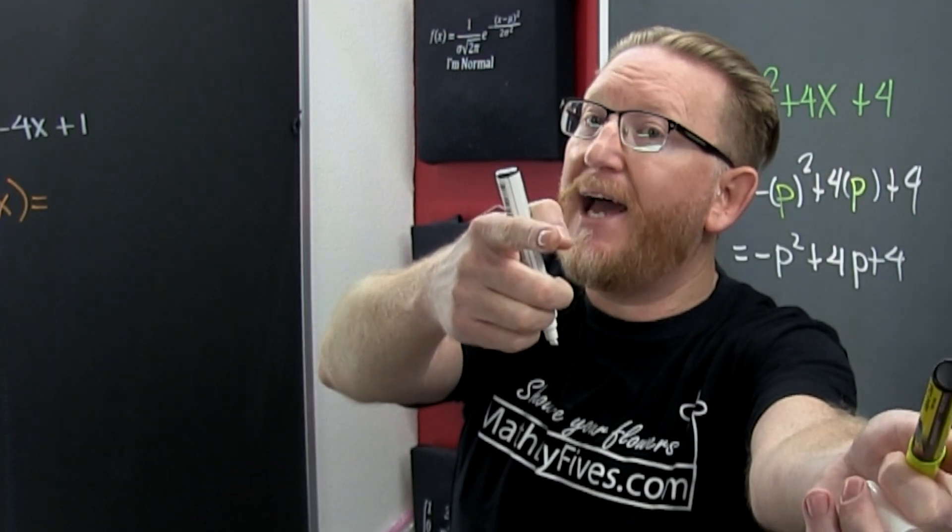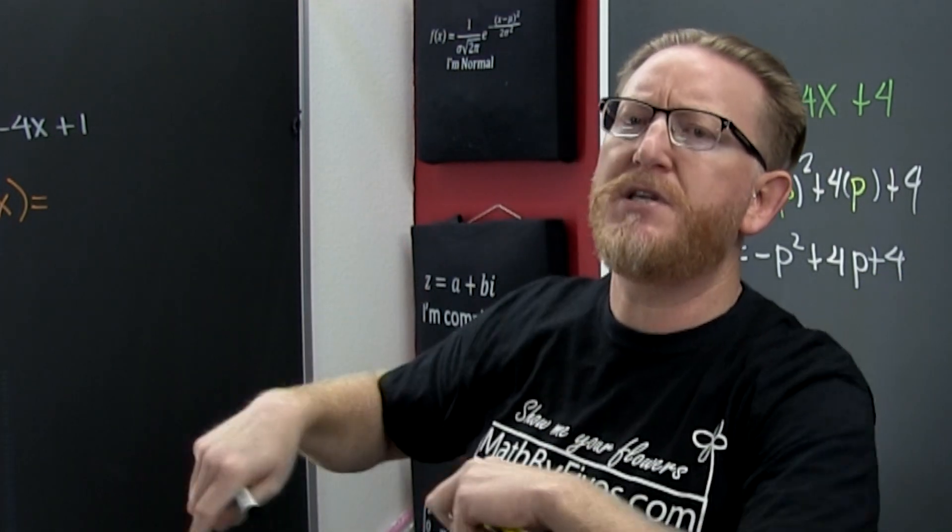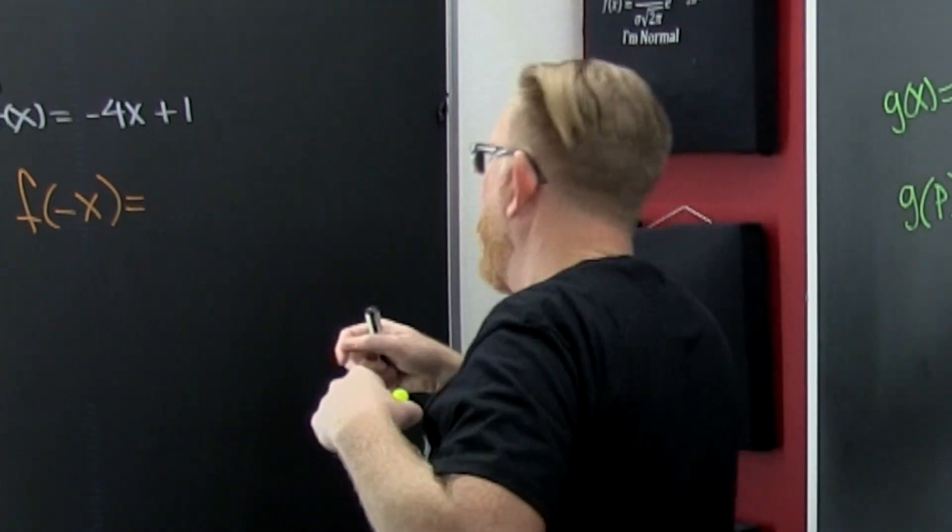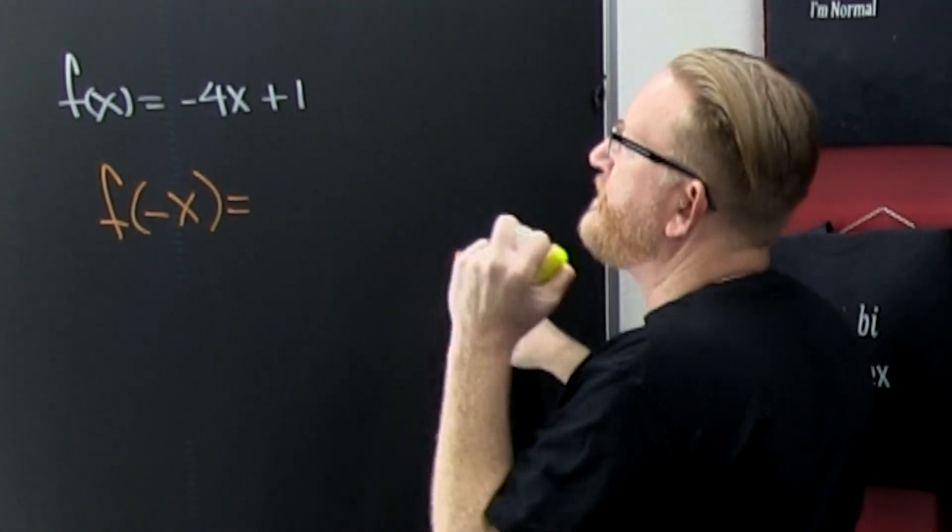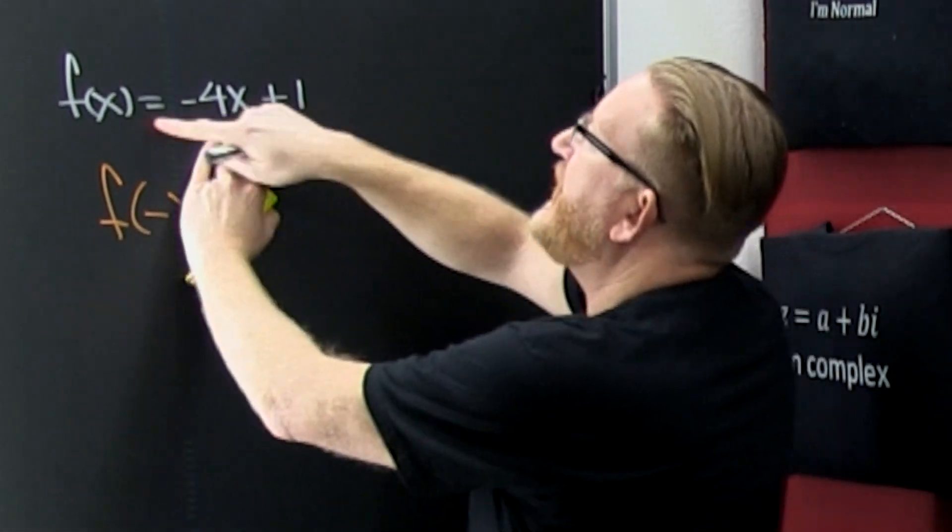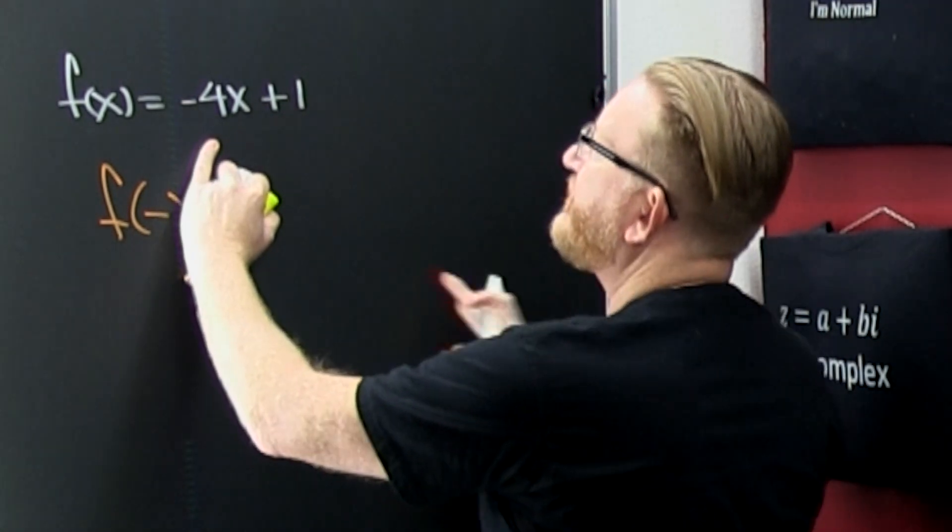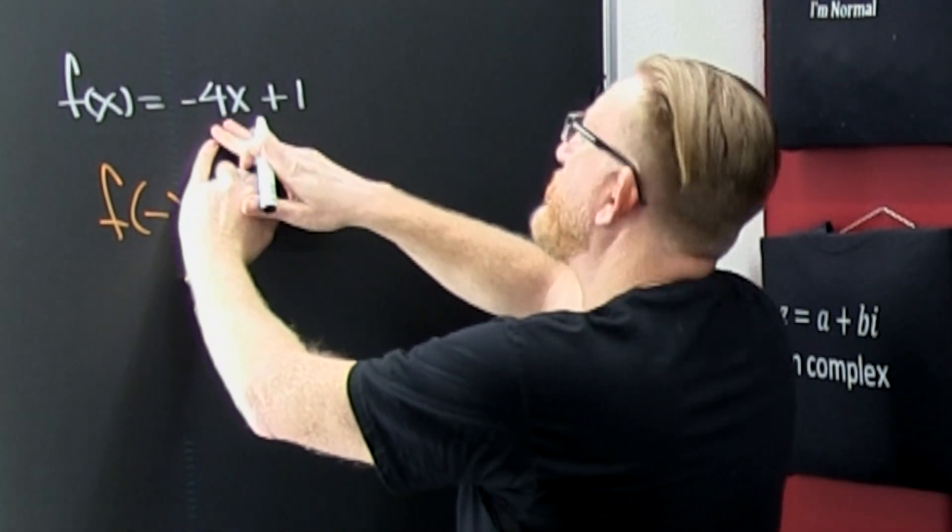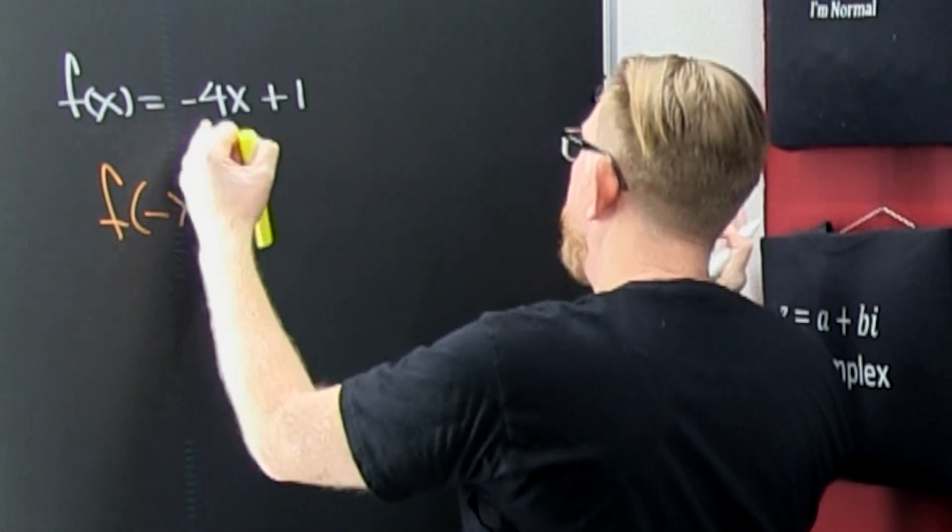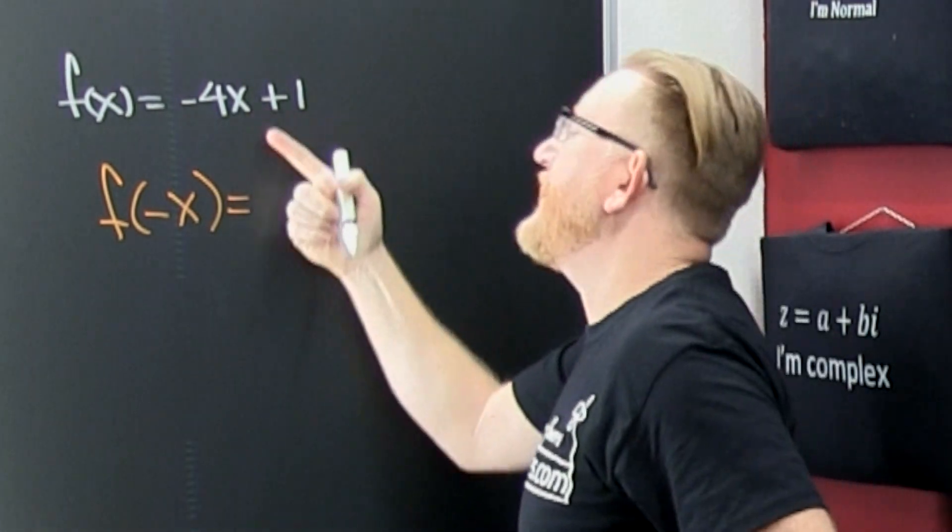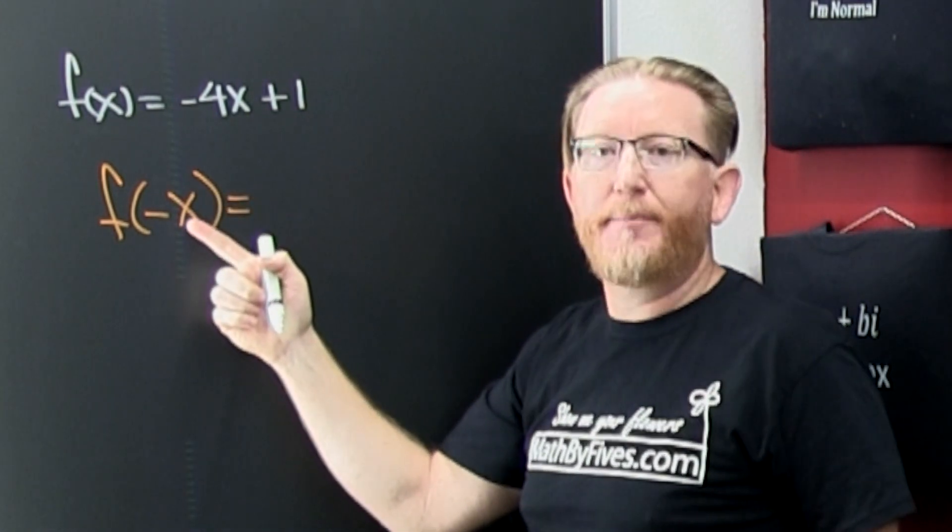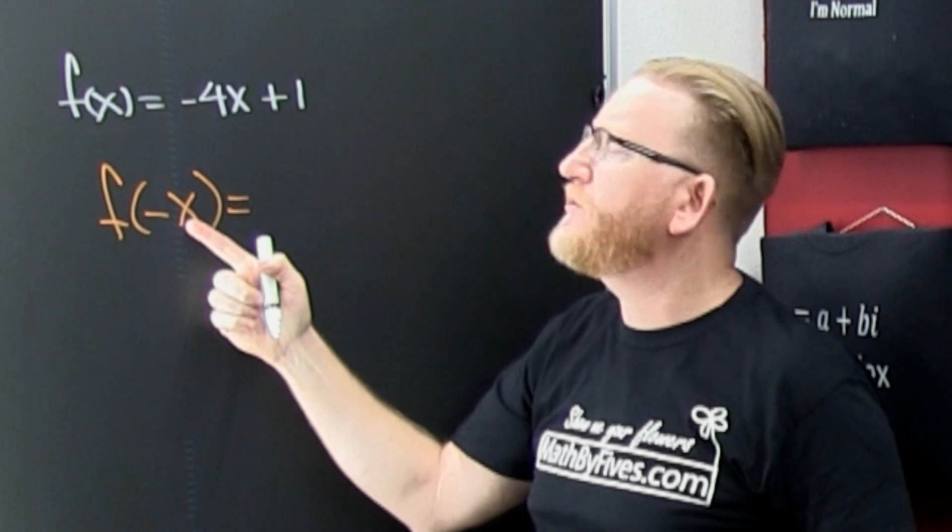Let's see our second example. They give me f(x) = -4x + 1. They want me to evaluate it at the opposite of x. I know it's a little bit confusing.